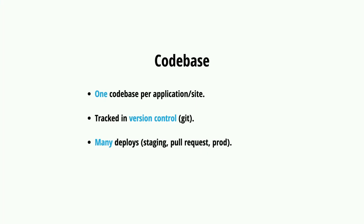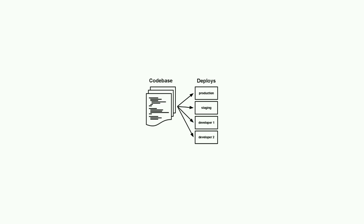The rules say you should have only one code base per application - in this case per website. You should have only one repository for managing all of your code. This project may have dependencies, but for that we use a dependency manager. Ideally, only code you are writing for this application should be stored on your repo. You should use a version control system like Git. You should use the same code base to do many deploys - whether deploying to staging, a pull request, or production. One code base, multiple deploys - one repo, multiple servers or stages.